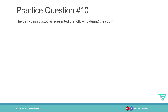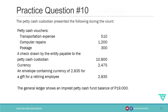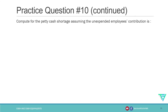This problem involves petty cash. For petty cash problems, the requirements are usually the petty cash adjusted balance and petty cash shortage or overage if any. For this problem, the requirement is to compute for the petty cash shortage, assuming the unexpended employees' contribution is intact or not intact. When I say intact, the envelope where the unexpended employees' contribution is placed is still closed or sealed. It's important to determine whether it's intact or not because it affects the computation of petty cash accounted.